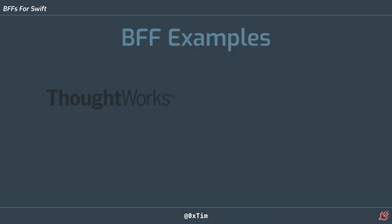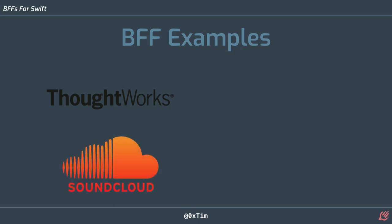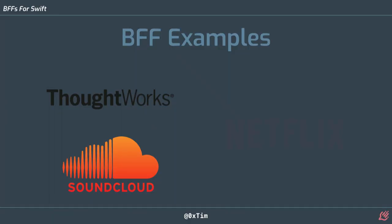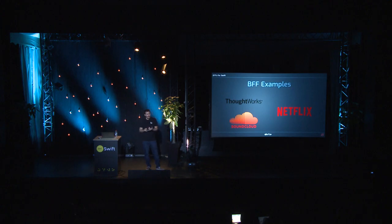Some examples: ThoughtWorks first did this with SoundCloud, which had hundreds of different services after moving from a monolithic app to microservices, and hundreds of clients — iOS apps, Android apps, websites, and third-party services like record labels calling their API. They split all these different clients to have their own BFF, which allowed them to move and adapt much quicker. Netflix is another famous example — every single Netflix client, whether that's the Xbox app, the PS4 app, the iOS app, or the website, they all have their own individual BFF which returns only the data that client needs.